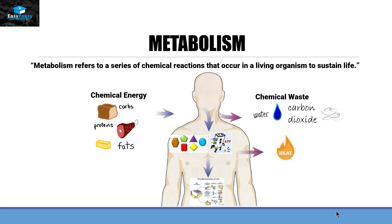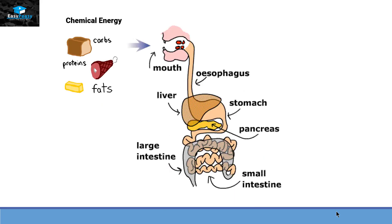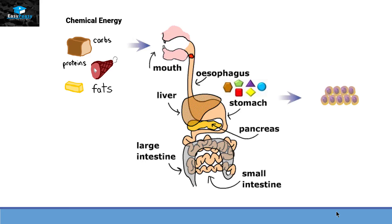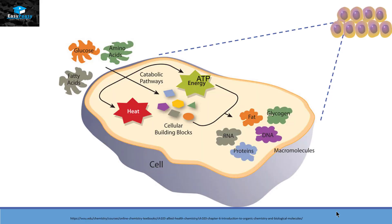This process starts with the digestive system, which converts large molecules of food into small particles that can be absorbed by cells, where these molecules will further metabolize in three different ways. The first way is that glucose, amino acids, and fatty acids will release energy in the form of ADP and heat energy, and then convert themselves into the building blocks of cells. These building blocks will then get incorporated into our proteins, RNAs, DNAs, fats, and glycogen.